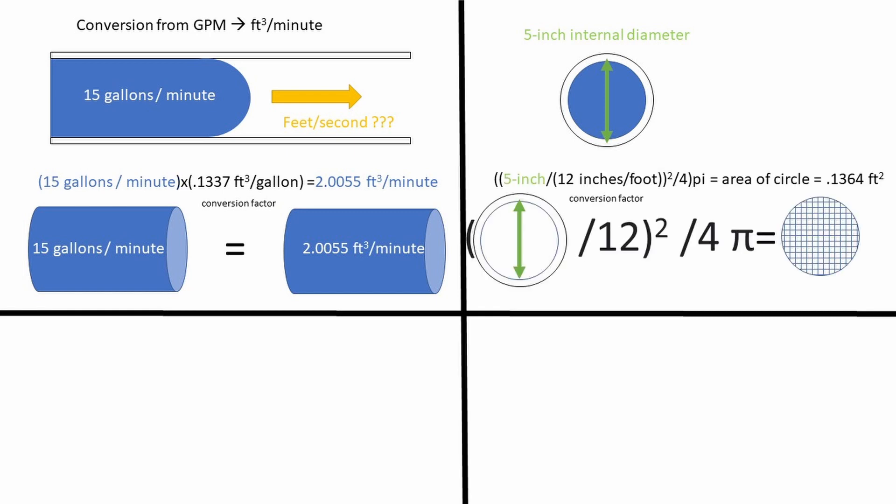Next, we must get our pipe internal diameter into a cross-sectional area that is in the units of square feet. We can divide our 5 inch diameter by 12 inches in a foot to get a diameter in feet. We can then use the area of a circle formula, which is the diameter squared divided by 4 times pi to get the internal cross-sectional area of the pipe.